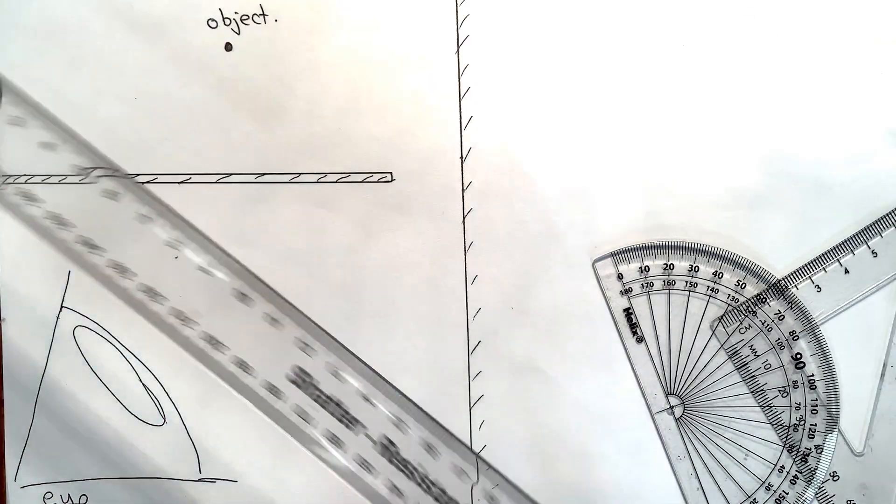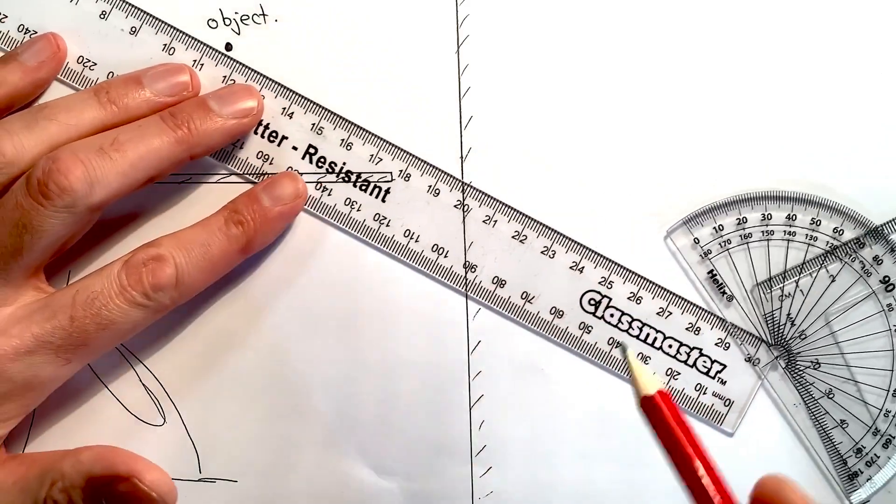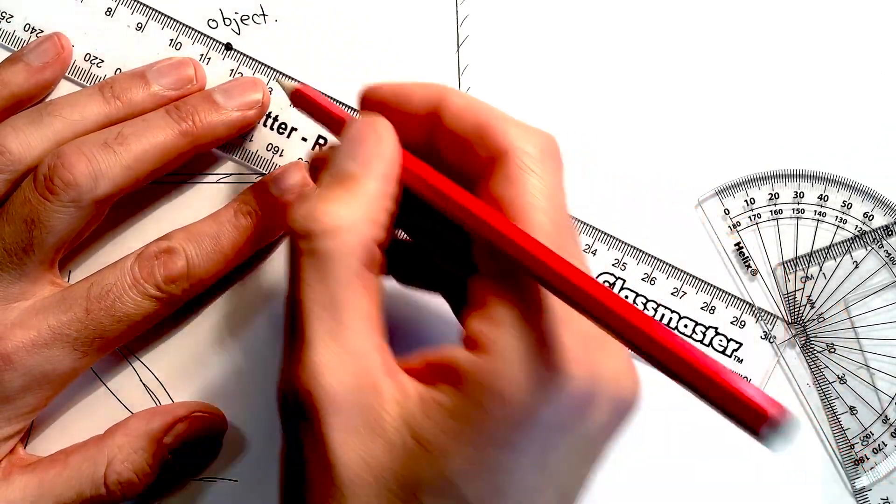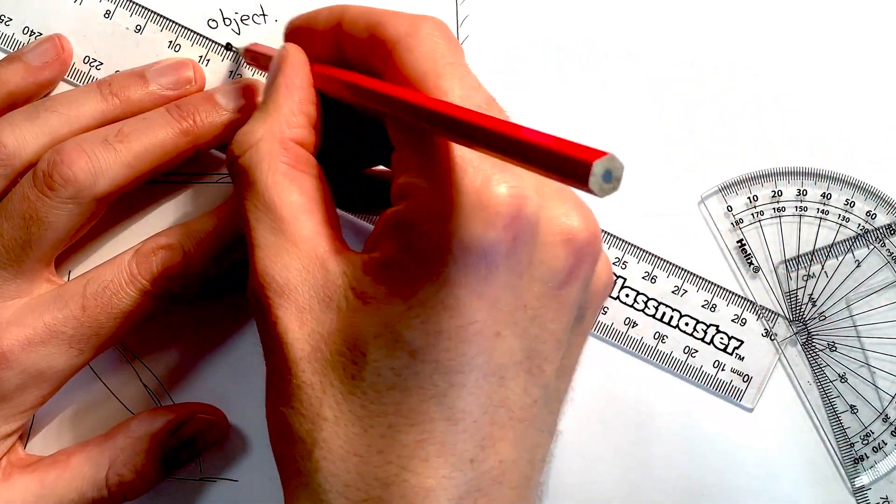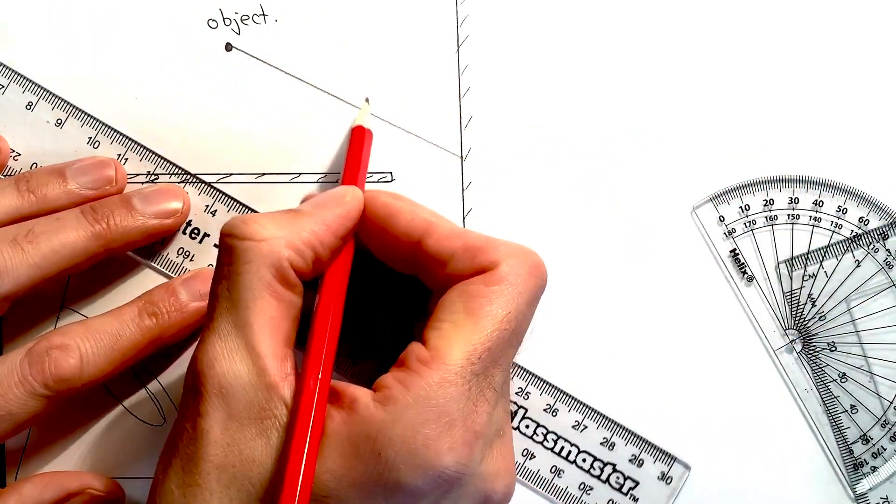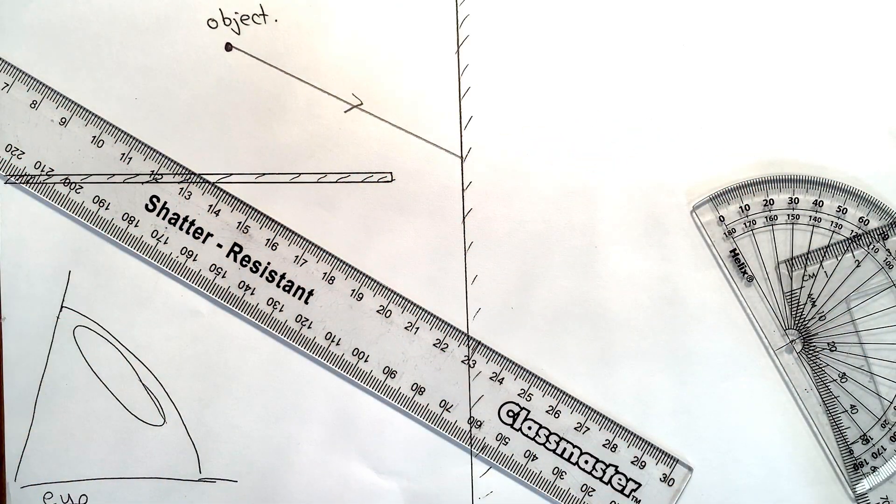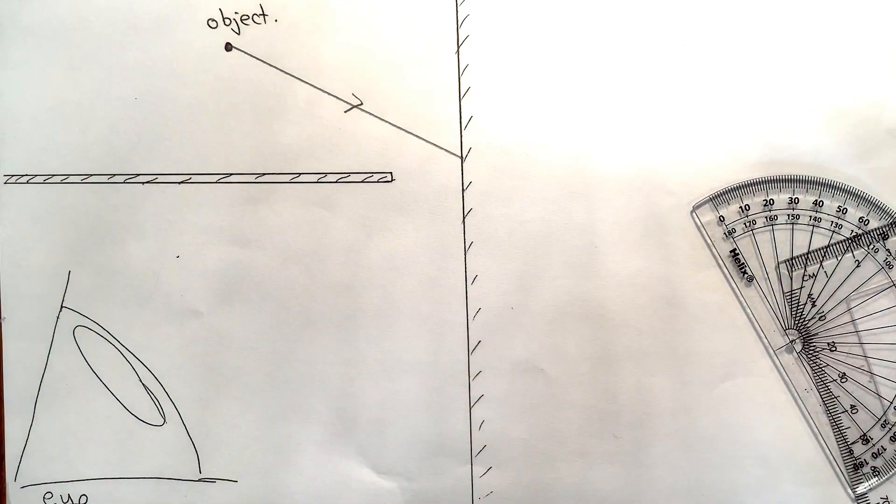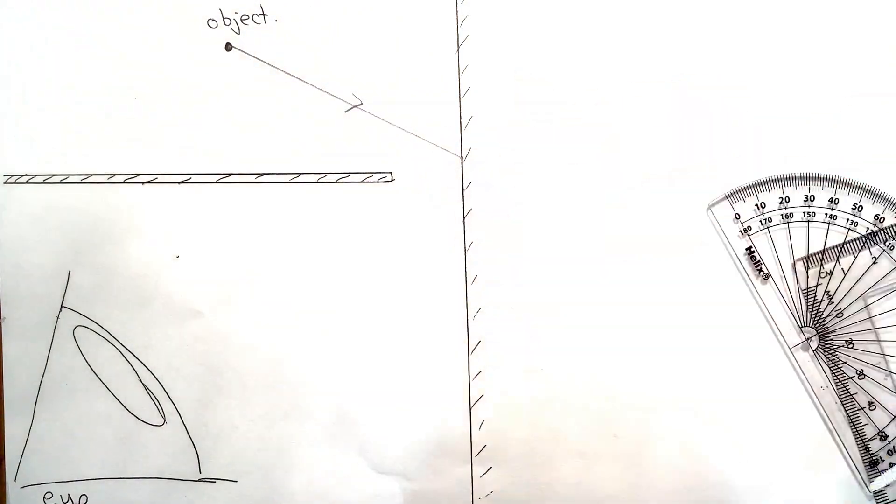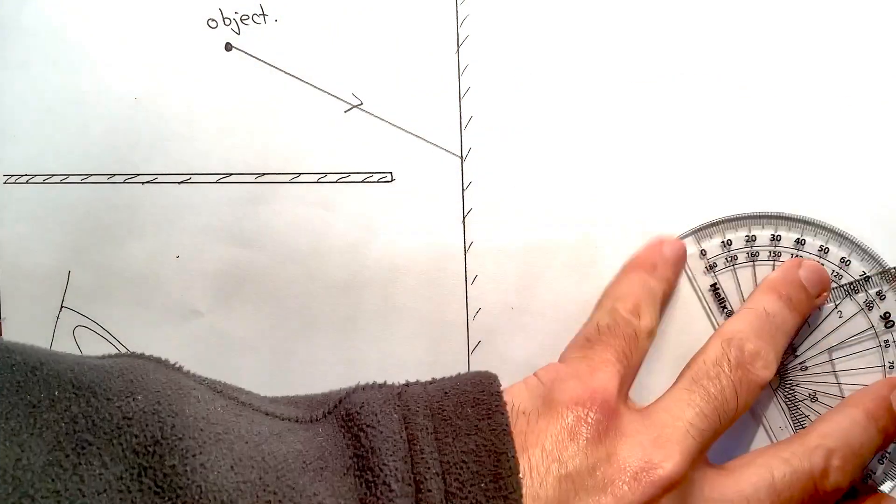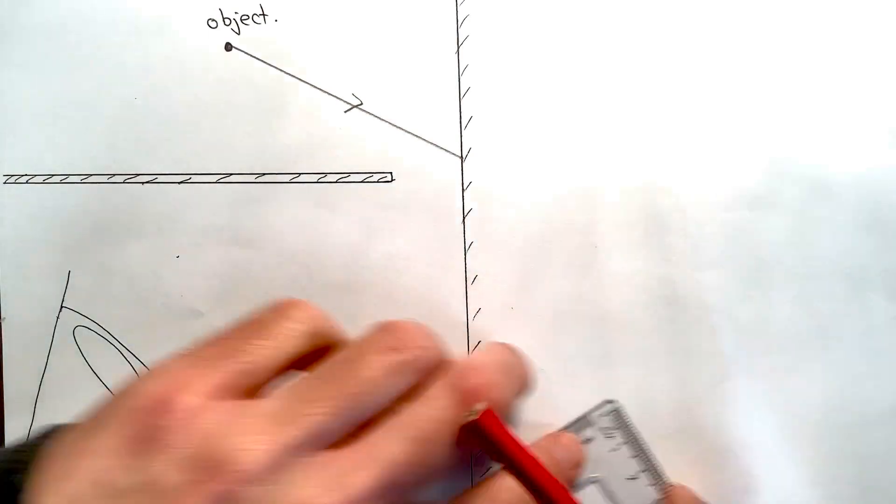So the first thing that I'm going to do is draw a ray of light coming from the object and hitting the mirror. Now this will be my incident ray. Once I've drawn that, I need to construct a normal at 90 degrees to the mirror, and that's going to be easiest done with the set square.